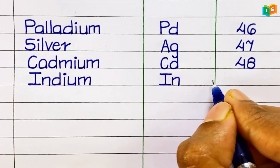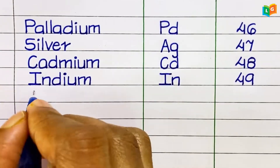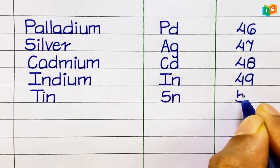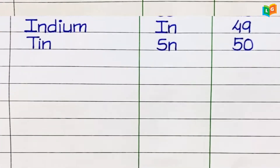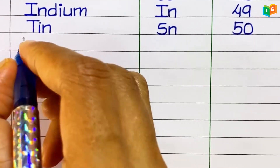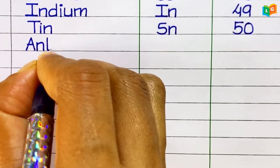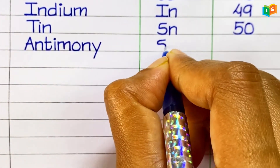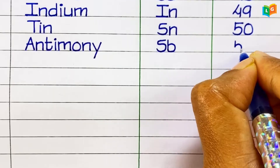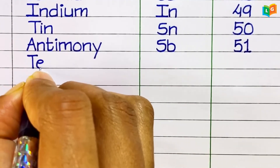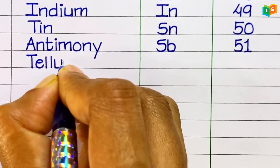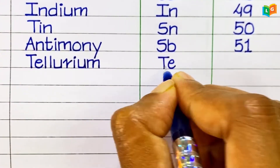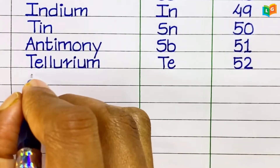Indium, symbol In, atomic number 49. Tin, symbol Sn, atomic number 50. Antimony, symbol Sb, atomic number 51. Tellurium, symbol Te, atomic number 52.